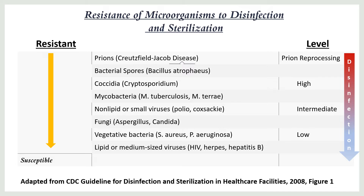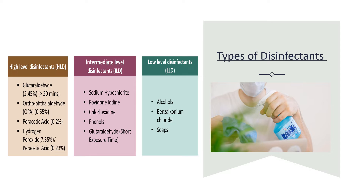Based on resistance, prions are the most resistant, followed by coccidia, then mycobacterium, then small non-lipid viruses, fungi, vegetative bacteria, and finally medium-sized lipid viruses. According to the level of processing required: prions require reprocessing, coccidia and mycobacterium require high-level disinfection or sterilization, non-lipid viruses require intermediate level disinfection, and medium-sized lipid viruses require low-level disinfection.